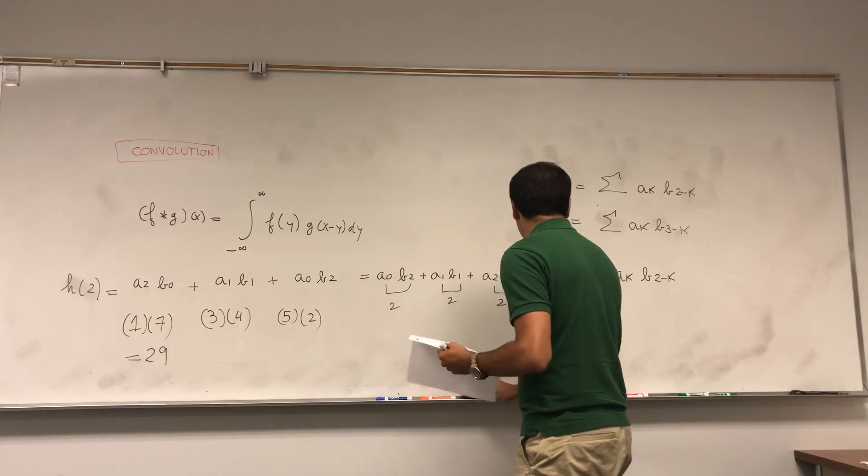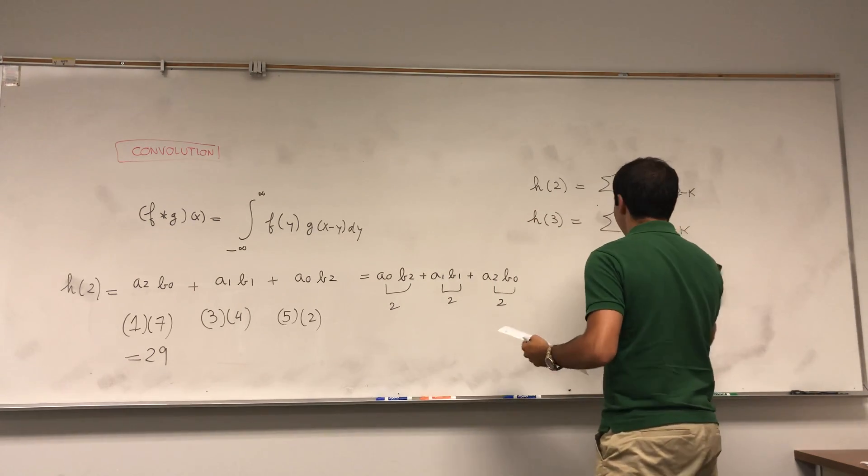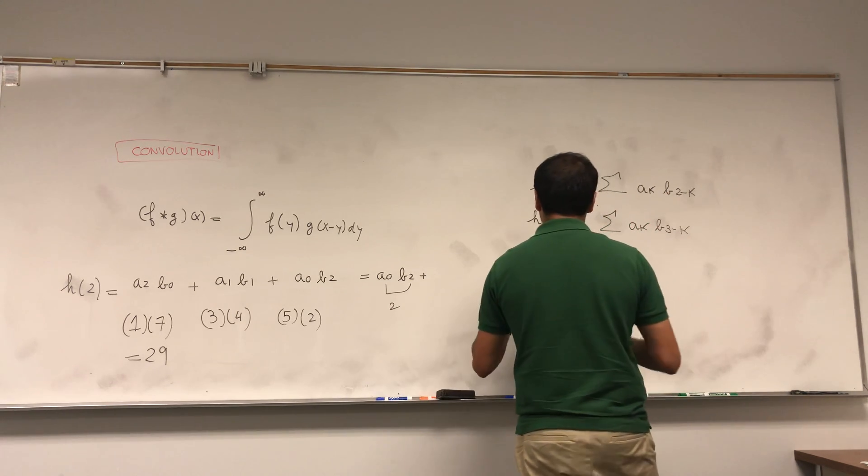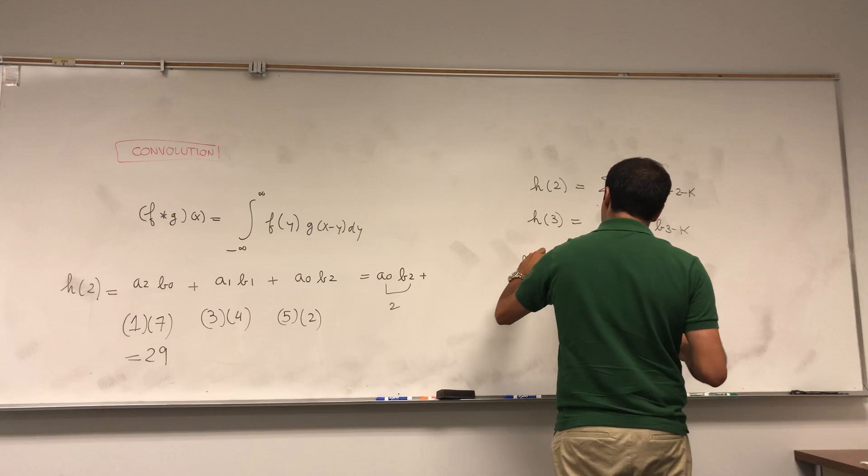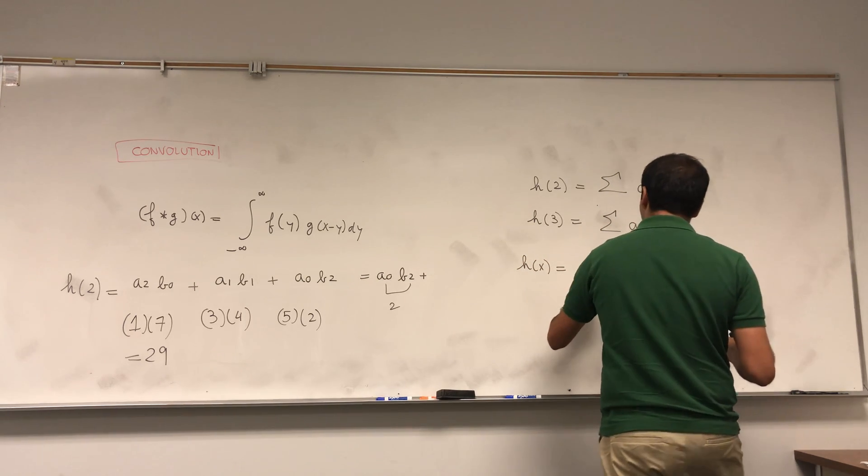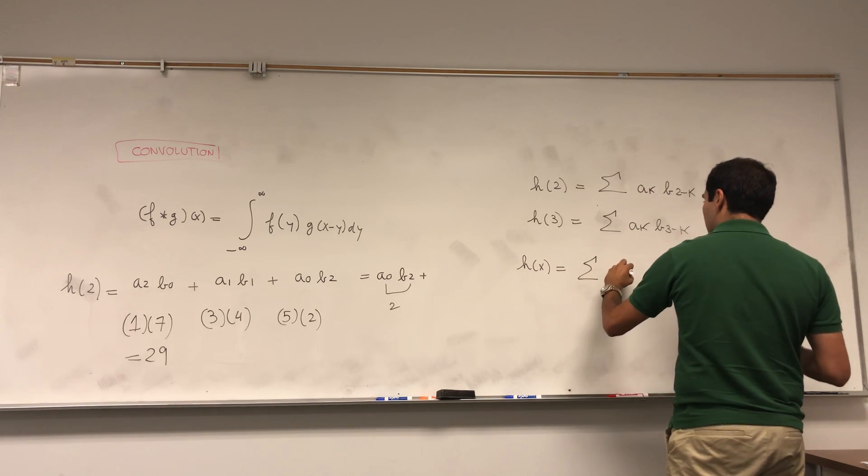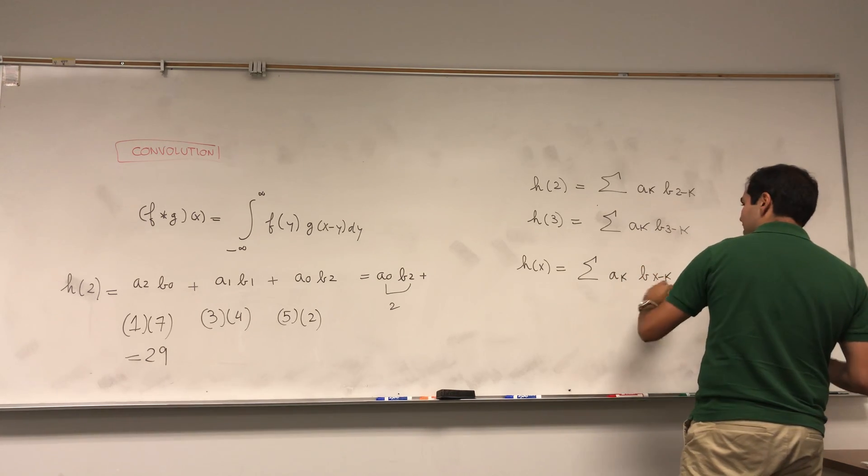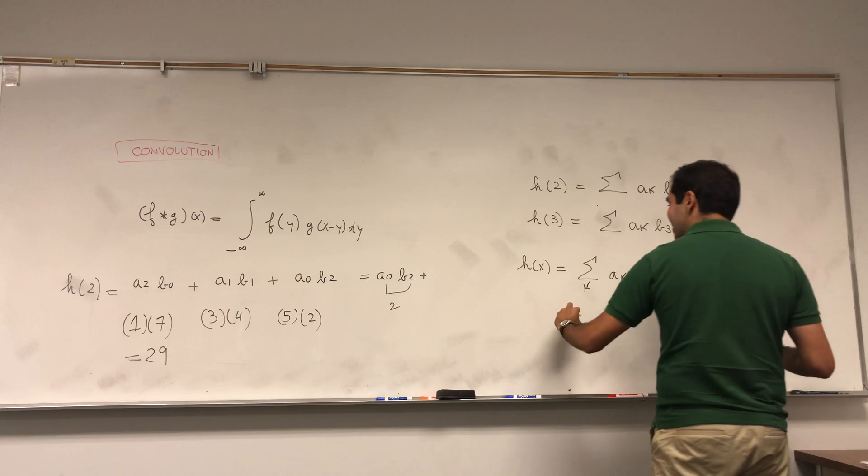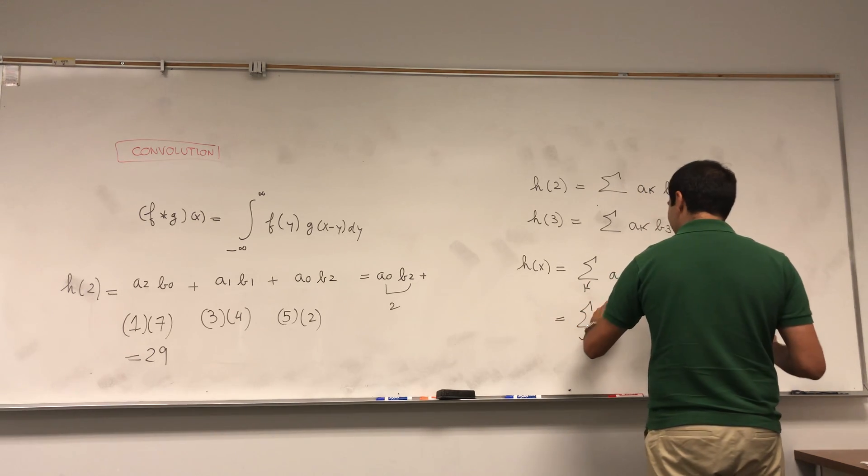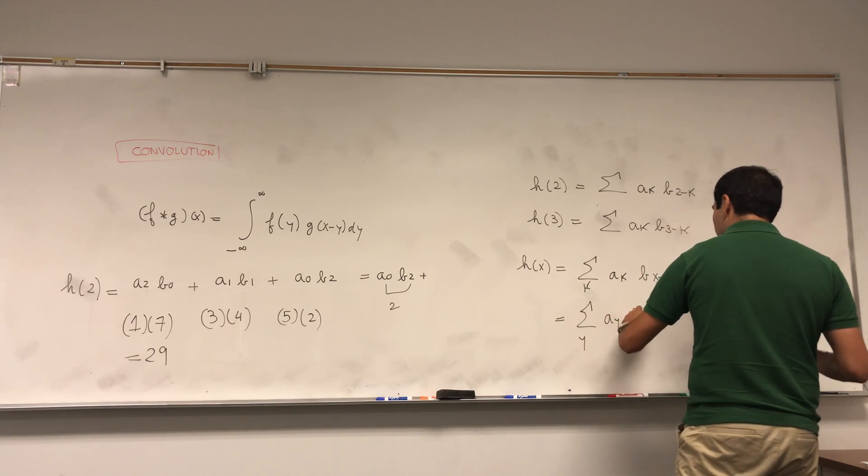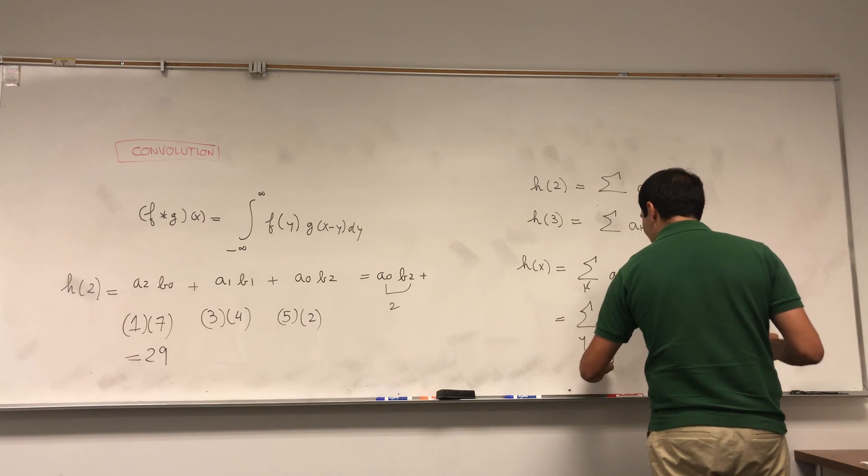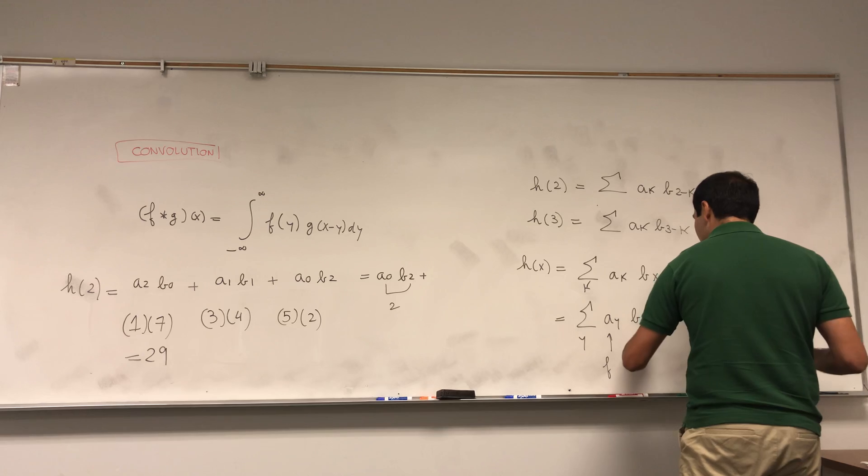And in fact, maybe even more suggestive notation: in general, if you want let's say h(x), that's the sum of aₖ b(x minus k). And it doesn't matter which index we use. Let's just use y. It's the sum of aᵧ b(x minus y). And remember, a was f, b was g.